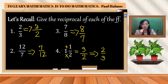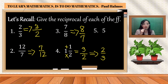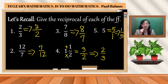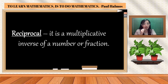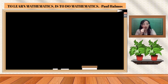Number five: the given is five. What is the denominator of a whole number? It is always one, so it gives us five over one. The reciprocal of five over one is one over five. Remember, reciprocal is the multiplicative inverse of a number or fraction.